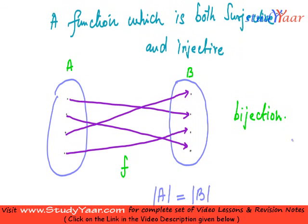If this function is not onto, this is not going to hold, because in that case, you can have something like this where you have an extra element in B which is not covered.